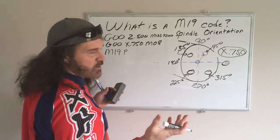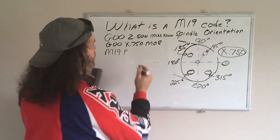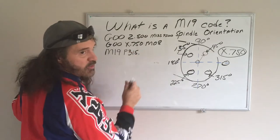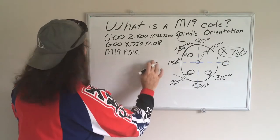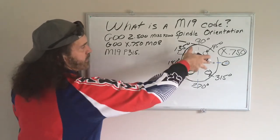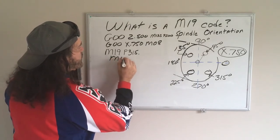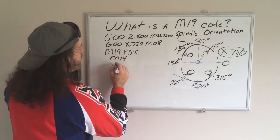So we'll do an M19 with the P code. You don't need nothing fancy for this if you just want something simple. P code at 315, you have to put the decimal point. Okay, and that will orient the spindle. Then I locked it, which was an M14.